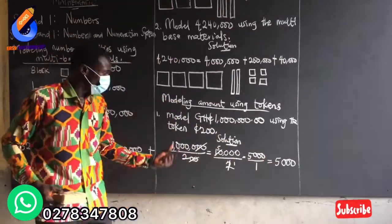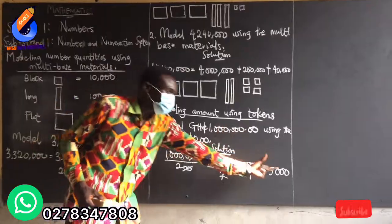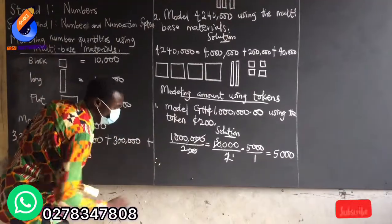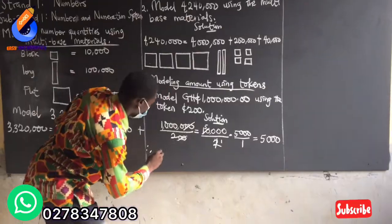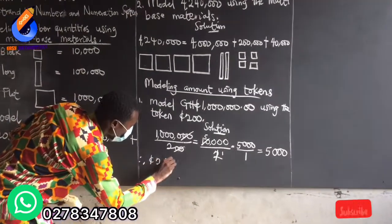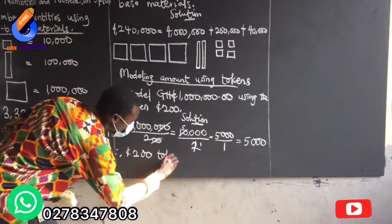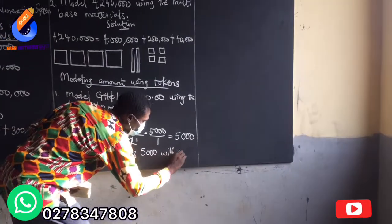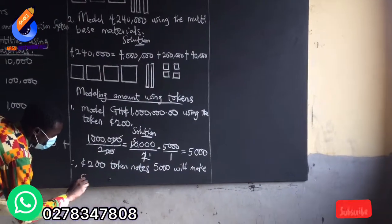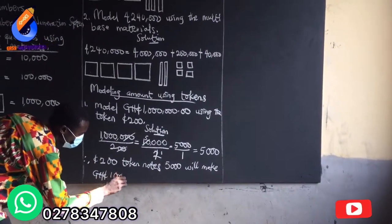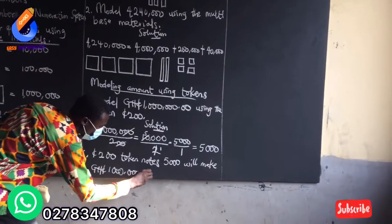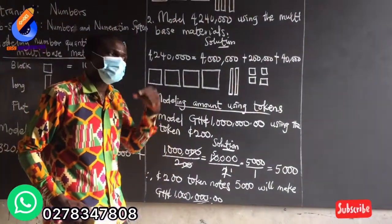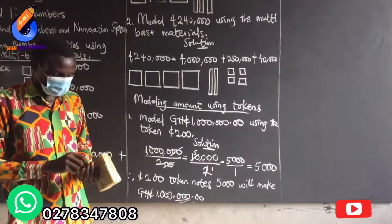So this answer means that 5,000 two-hundred-cedi token notes will give me 1 million Ghana cedis. Therefore, 200-cedi token notes of 5,000 will make the amount 1 million Ghana cedis.